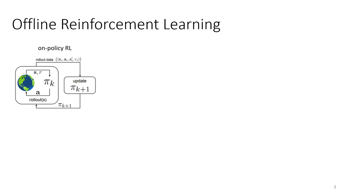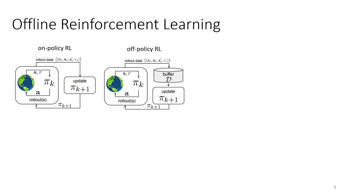To briefly recap from Monday: on-policy reinforcement learning algorithms interact with the world, collect a little bit of data, use that data to update the model, then discard that data and collect more. Off-policy RL algorithms are essentially a buffered version of this, where all the data collected so far is stored in a replay buffer and used for each update, but you still iteratively collect additional data with the latest policy.